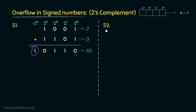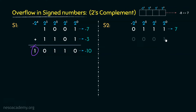Scenario 2: using the pattern 0 1 1 1 — 1's are placed underneath 4, 2, and 1 — giving positive 7. The second pattern is 0 0 0 1, with 1 placed underneath 2 to the power 0, giving positive 1.